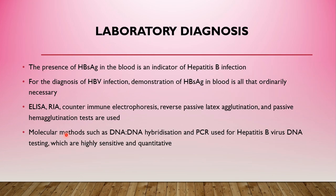For laboratory diagnosis, the presence of hepatitis B surface antigen in the blood is an indicator of HBV infection. Tests used include ELISA, RIA, counter-immunoelectrophoresis, reverse passive latex agglutination, and passive hemagglutination. Molecular methods such as DNA hybridization and PCR are also used for hepatitis B virus DNA testing, which are highly sensitive and quantitative.